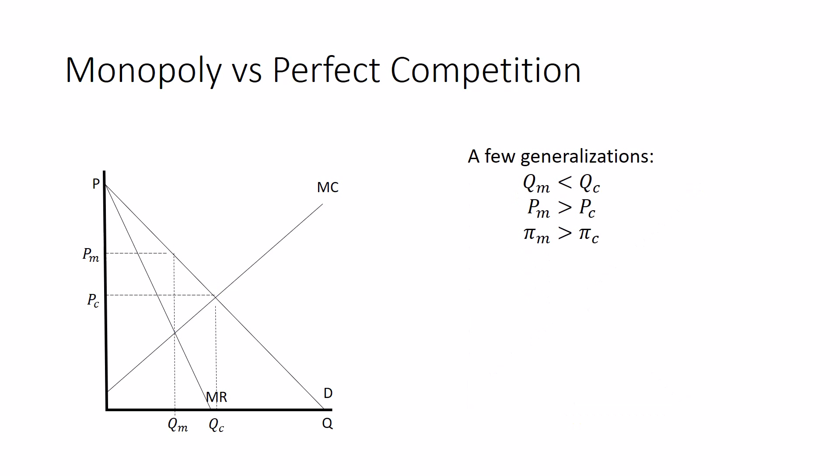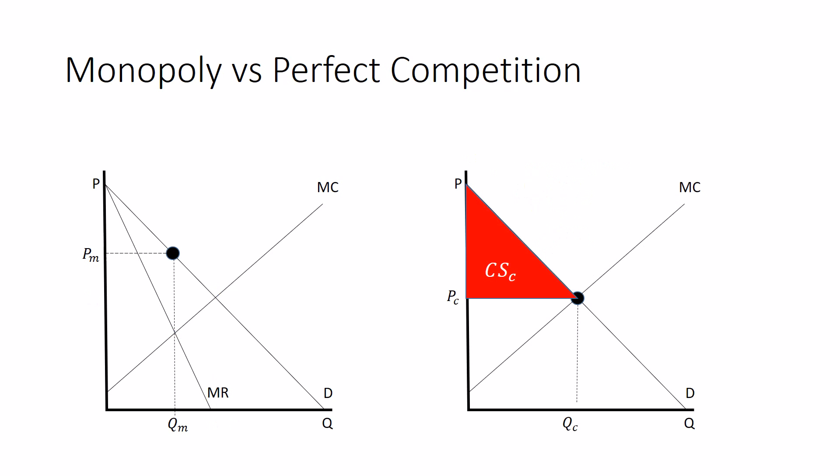All right, let's take a quick look at consumer and producer surplus in all this. Consumer surplus in Perfect Competition. Everything below the demand curve above the price. It's excess willingness to pay.